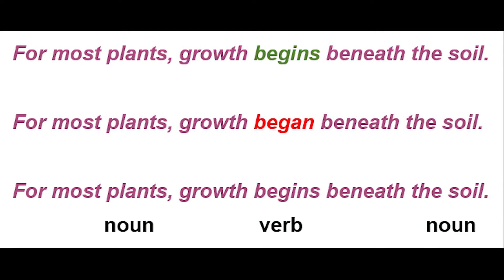I've taken an example from the paragraph that I wrote yesterday. The sentence reads: 'For most plants, growth begins beneath the soil.' The word 'begins' in this sentence is the verb and it's written in the present tense, showing that the action is happening to the plant now. I would not use the other version of that word, 'began.' Listen to how it sounds: 'For most plants, growth began beneath the soil.' It sounds like plants don't exist anymore, but they do — they're still around. So I write using the present tense.